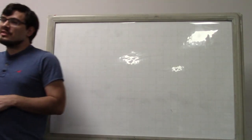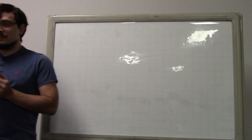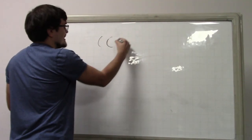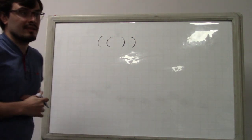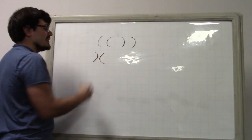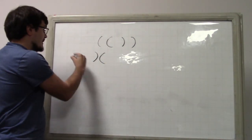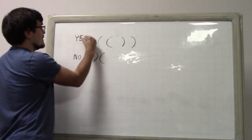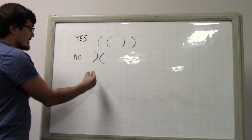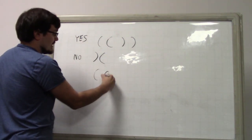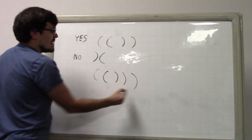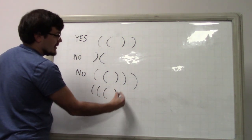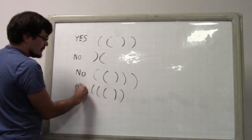Check whether a set of parentheses is well-balanced. You probably know this one. For example, we say that these parentheses are well-balanced. However, these parentheses are not — that's no. This is yes. And if you have something like this, maybe it's also no. And if you have something like this, where there's not enough closing parentheses, it's also no.